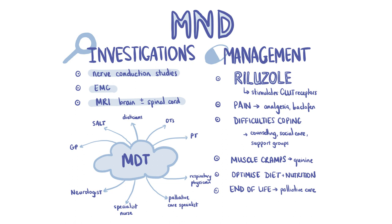An MRI of the brain and/or spinal cord is also useful to exclude other causes of motor weakness and nervous system dysfunction, such as cervical cord compression and myelopathy. The only life-prolonging treatment that can be given is Riluzole, which works by stimulating glutamate receptors. Treatment is mainly symptomatic, as there are no cures for MND.